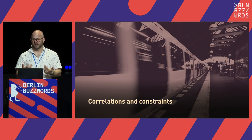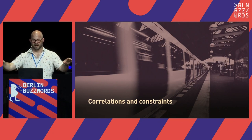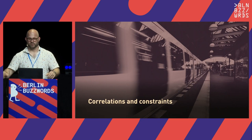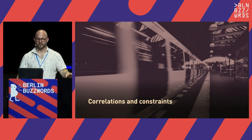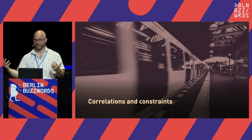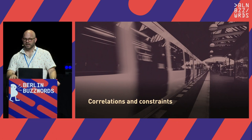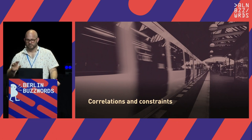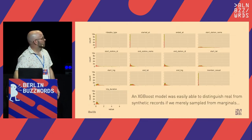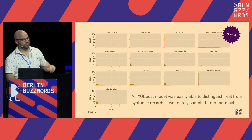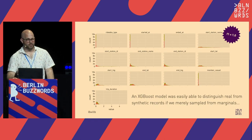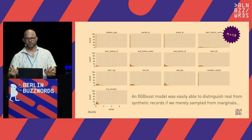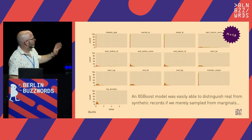I took the bike share data and perturbed the columns — I had a set of synthetic observations sampled from the marginals, and I had the real data, and I labeled those subsets. I said the real data are real and the synthetic data are not real. I then trained an XGBoost model to distinguish between these two. This model performed extraordinarily well — we had an F1 score of one. I did hold out a test set; this is not overfitting.